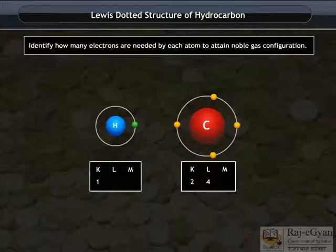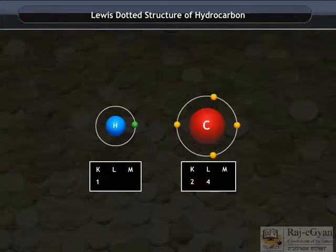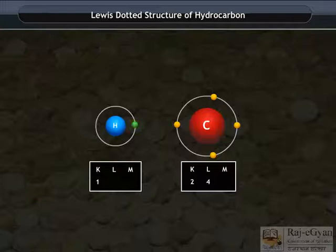Identify how many electrons are needed by each atom to attain a noble gas configuration. In ethane, carbon needs 4 electrons while hydrogen needs 1 electron to attain a noble gas configuration.